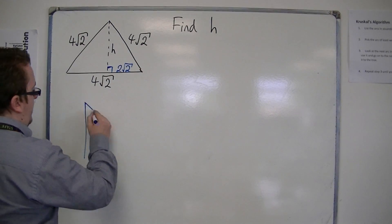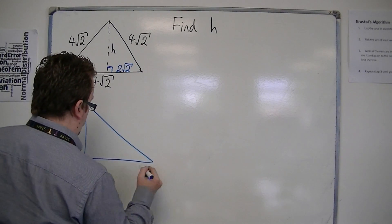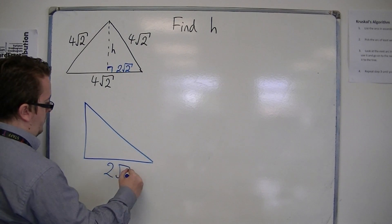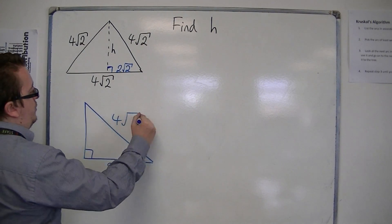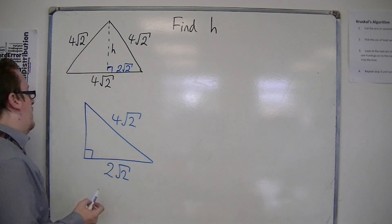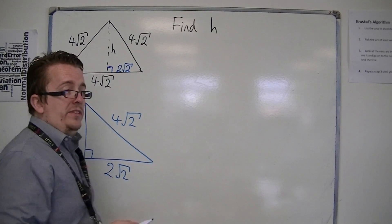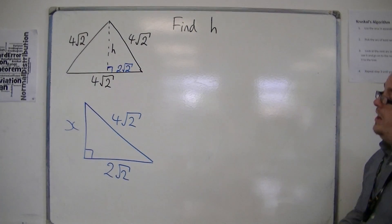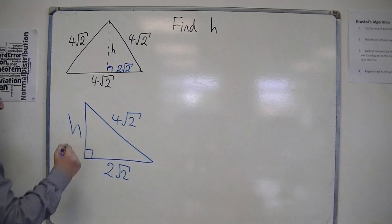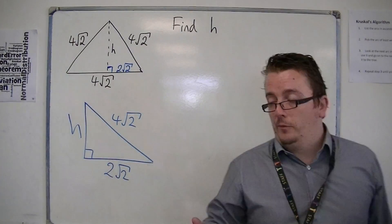So actually what we're dealing with is a right-angled triangle where we've got 2 root 2 as the base, and we've got 4 root 2 as the hypotenuse. And what we need to do is find this length, this height. I don't know why I've called it x, I'm going to call it h. It makes much more sense seeing as that's the label we're dealing with.